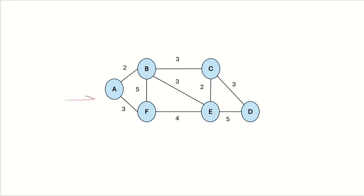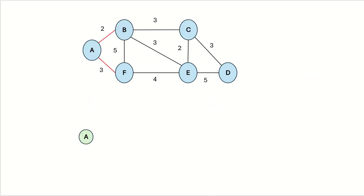Let's take an example. This is our input graph and we start by choosing any random vertex. In our example we are taking vertex A. This graph has 6 vertices, so our final MST will also have 6 vertices and the number of edges will be 6 minus 1, which is 5. We have randomly chosen vertex A, so now we add all the edges connected to this vertex to the priority queue.